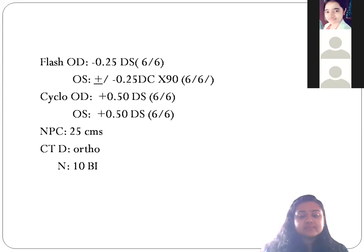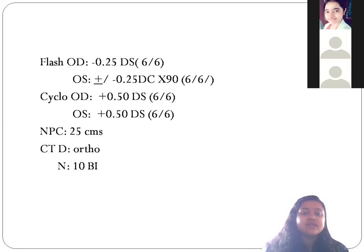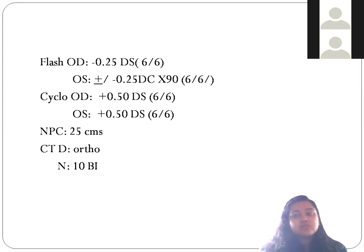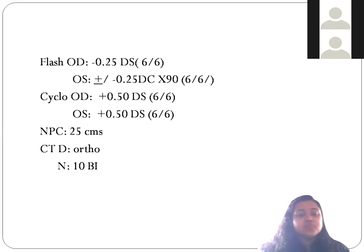When we started checking, we found the near point of convergence is 25 centimeters. What should be the normal near point of convergence for a normal person? It should be 6 to 7 centimeters. So for this child, we found the near point of convergence is 25 centimeters.